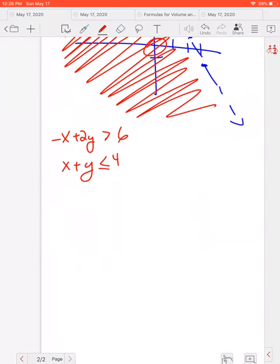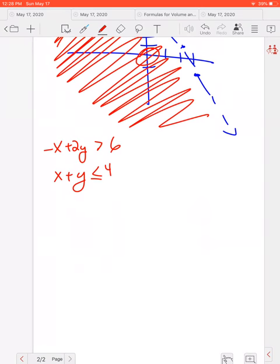Now remember, if we have two of them, we need to make sure they're in the form of y equals mx plus b. So here we're going to add x to both sides. So we'd have 2y is greater than x plus 6. And then we're going to divide everything by 2. There's an invisible one there.